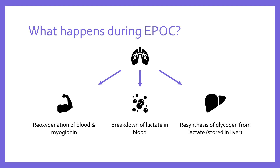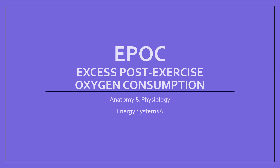The lactate built up as a consequence of the oxygen debt is broken down and resynthesized into glycogen — the stored form of sugar — which gets stored predominantly in the liver, ready for another bout of exercise. So during the EPOC: we re-oxygenate the blood and the myoglobin in the muscles; we use oxygen to break down blood lactate back to resting levels; and we re-synthesize glycogen and return it to the liver. I hope that's been helpful in understanding what EPOC is all about.